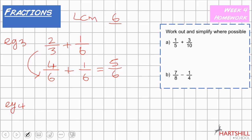Example four uses the same fractions but with subtraction: two thirds take away one sixth. We already know two thirds becomes four over six. This time we're taking away one sixth, so four take away one is three, giving three over six. We can simplify three over six — that's a half. And that's your answer.